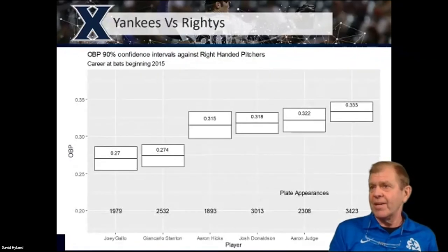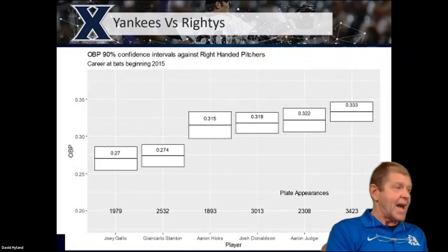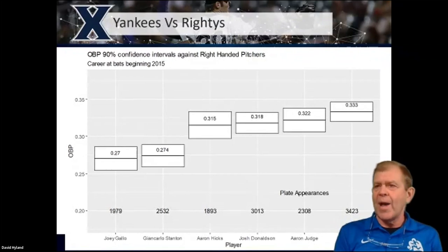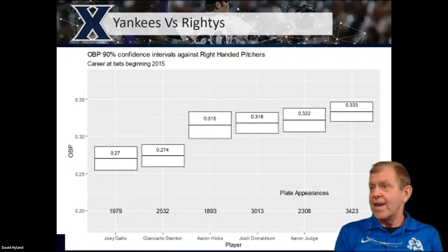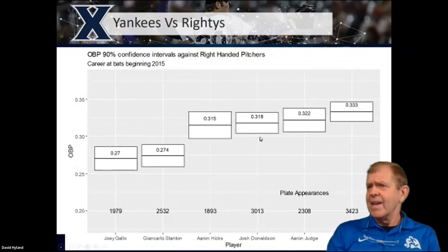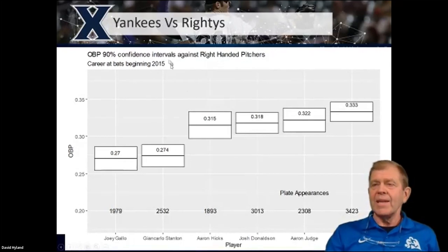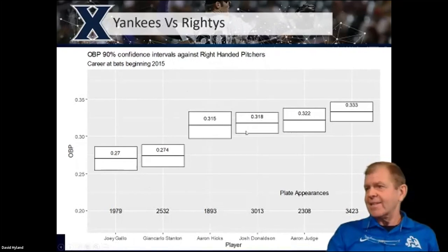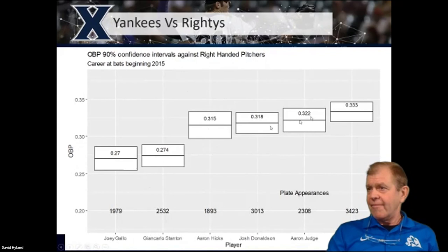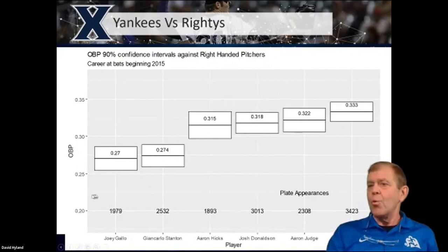Instead, let's look at careers. I go back to 2015 and break out confidence intervals against right-handed pitchers. Taking career at-bats against right-handed pitchers beginning with 2015, we see that Hicks, Donaldson, Judge, and Rizzo appear to dominate Joey Gallo and Giancarlo Stanton — the confidence intervals are all significantly higher — but I'm not getting a lot of guidance on those four, even though we're getting quite a few plate appearances.